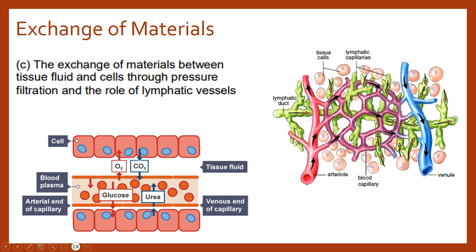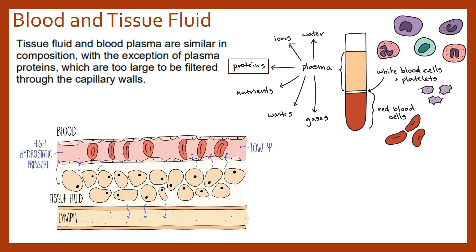We'll also look at the lymphatic vessels, found very close to the capillary network, and their role in exchange. Starting by comparing the blood plasma — the liquid component of our blood — to the tissue fluid that surrounds all of our body cells: they are quite similar in composition, both mostly water with other things dissolved within them. The major exception is plasma proteins, which are too large to filter through the capillary walls and therefore always stay behind in the bloodstream.